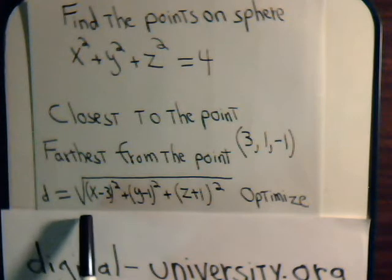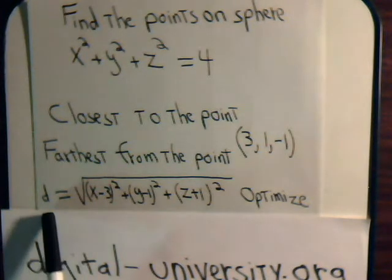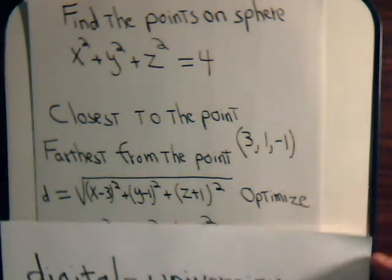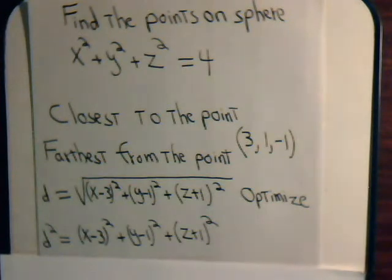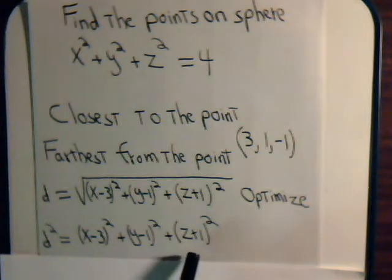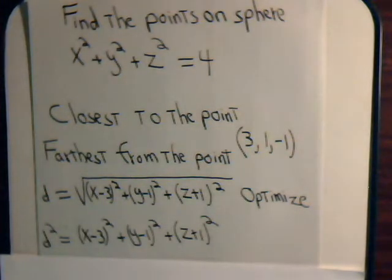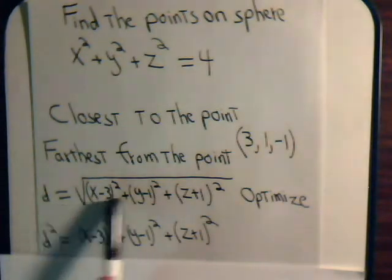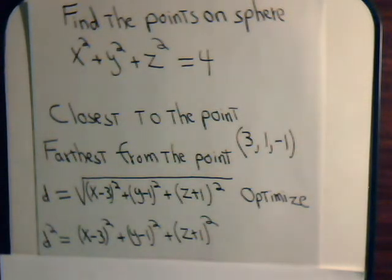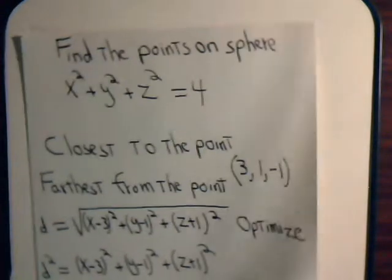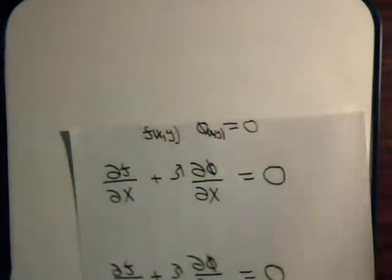If we have a square root here, we can square this to get a simpler expression that would be easier to work with. Obviously any value of x, y, and z that minimizes this will also minimize this, and any value of x, y, and z that maximizes this will also maximize this.